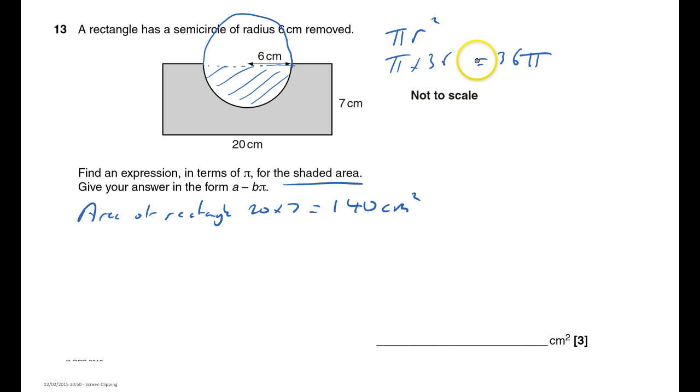But that's the whole circle. I actually want to take away the shaded part of my circle so I need to take away 18 pi. And so I'll end up with my area will be 140 take away 18 pi.